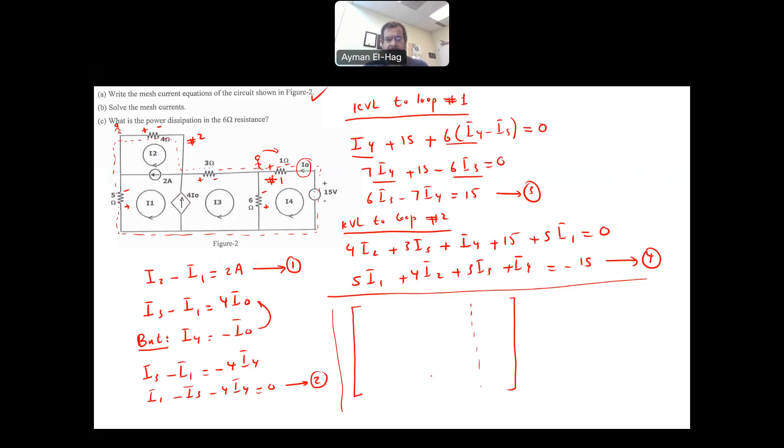Augmented matrix. This is the 4 by 4 matrix representing I1, I2, I3, and I4. From the first equation, the coefficient of I1 is minus 1, of I2 is 1, I3 and I4 are zeros, and the output is 2. The second equation: I1 is 1, I2 is 0, I3 is minus 1, and I4 is minus 4, equal to 0. Third equation: I1 and I2 both are zeros, this is equal to 6 minus 7 and 15. And finally, the last equation: this is 5, 4, 3, 1, and this is minus 15. So basically, that is our equation.